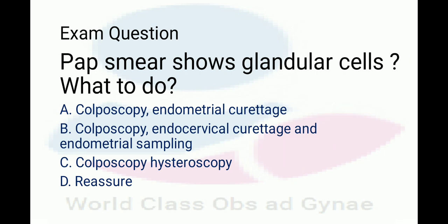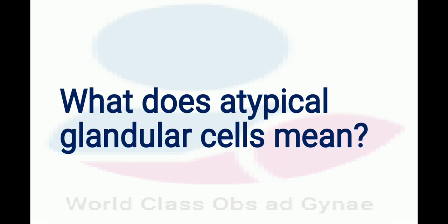In the previous FCPS Part 2 exam on the 25th of August, a question came that pap smear shows glandular cells — what to do. We have different options: colposcopy and endometrial curettage; colposcopy, endocervical curettage, and endometrial sampling; colposcopy and hysteroscopy; or reassure. It would be better if we try to understand this topic in a little more detail.